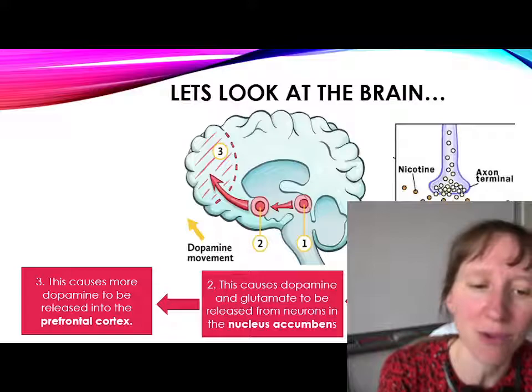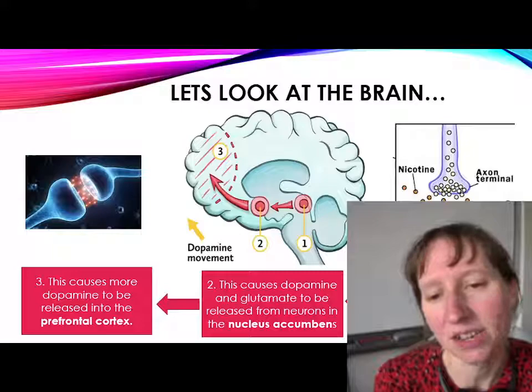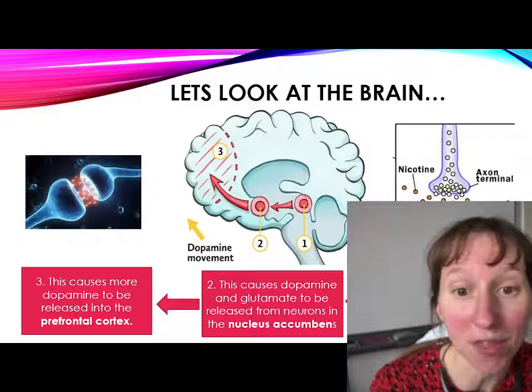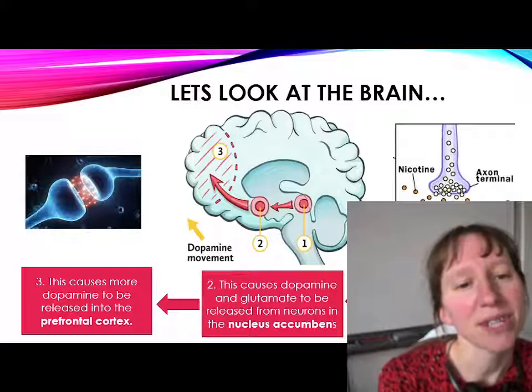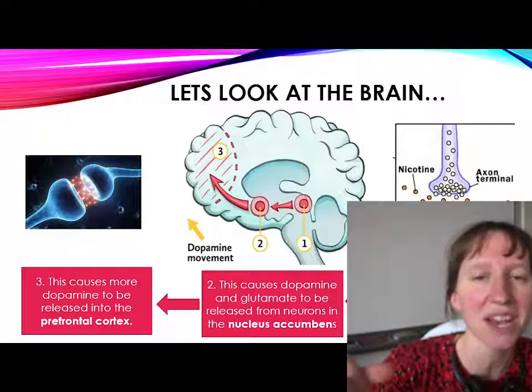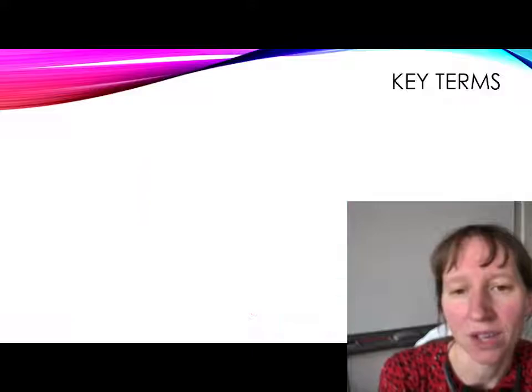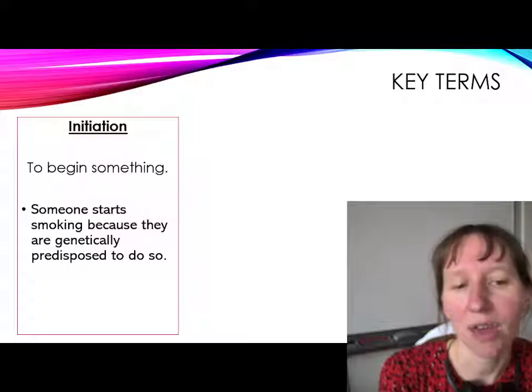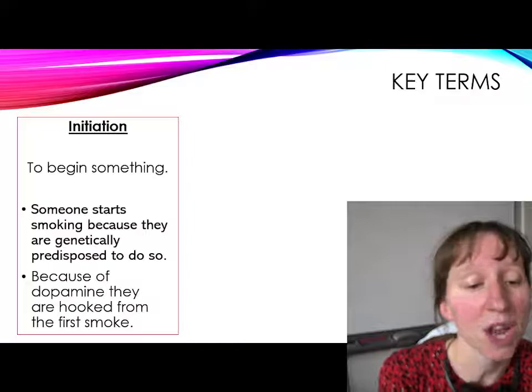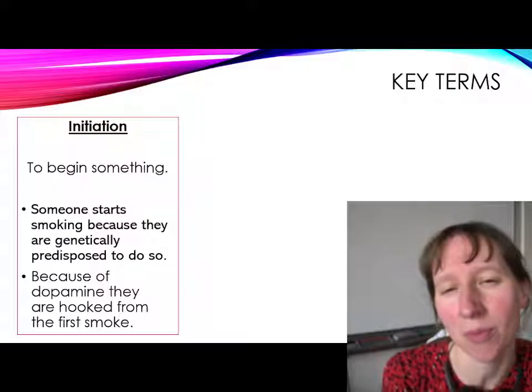The third part of the reward pathway is that more dopamine is then released into the prefrontal cortex — the shaded area, number three in the diagram. All of that is what we mean by a buzz in the brain: nicotine attaching in one area causes this big cascade of dopamine to be released through the reward pathway, experienced as a feeling of euphoria. So that is how the biological approach explains the initiation of smoking — either through genetic predisposition, or because someone is hooked from the very first smoke due to that dopamine rush.